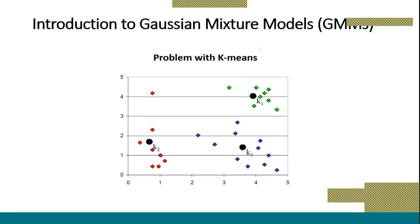Good afternoon class. In the last lecture we have seen the K-means clustering. Now today we will see the new topic called the Gaussian Mixture Model, also called GMM. Before we start, let us see what are the limitations or disadvantages of the K-means algorithm. I am taking one K-means algorithm output.